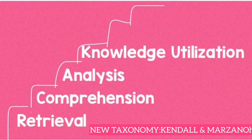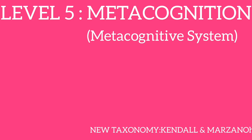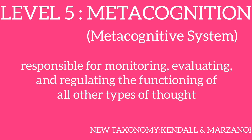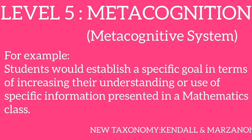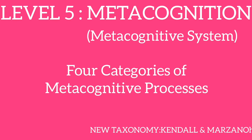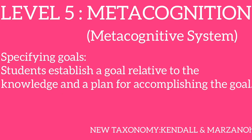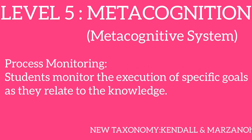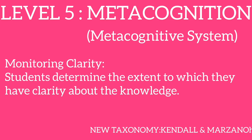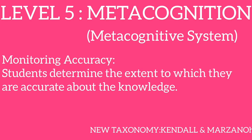The fifth level is metacognition, under the metacognitive system. It's responsible for monitoring, evaluating, and regulating the functioning of all other types of thought. For example, students would establish a specific goal in terms of increasing their understanding or use of specific information presented in a mathematics class. There are four categories of metacognitive processes: specifying goals, where students establish a goal relative to the knowledge and a plan for accomplishing it; process monitoring, where students monitor the execution of specific goals; monitoring clarity, where students determine the extent to which they have clarity about the knowledge; and monitoring accuracy, where students determine the extent to which they are accurate about the knowledge.